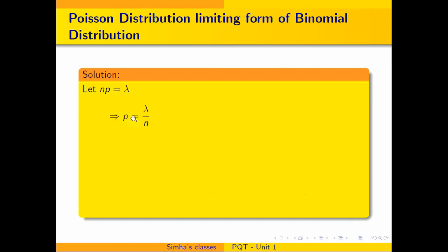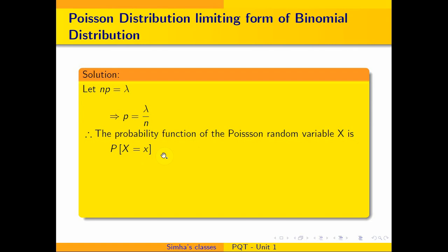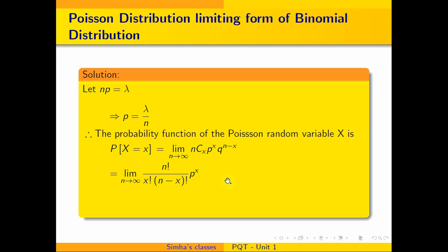Let that constant be lambda. Then I can find p as lambda divided by n. Now, the probability function of the Poisson random variable x is expressed as: the probability that x equals some value x is equal to the limit as n tends to infinity of nCx times p to the power x times q to the power n minus x. Here p equals lambda over n.